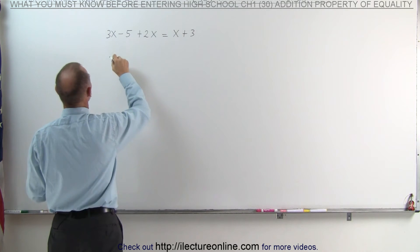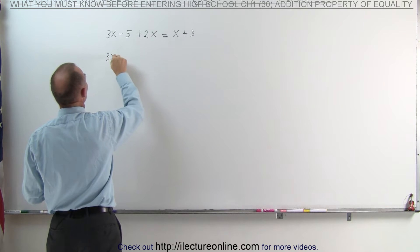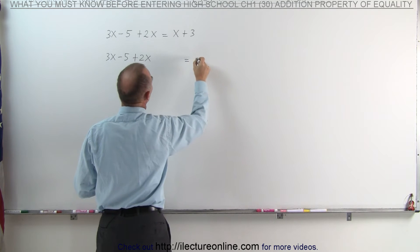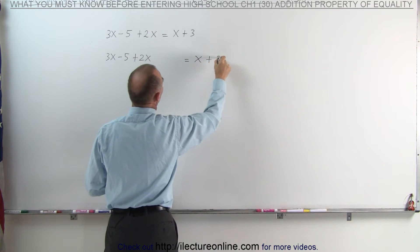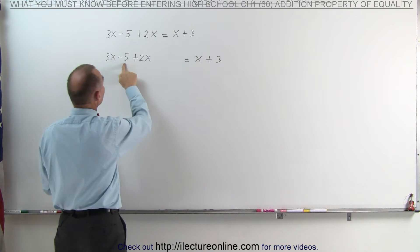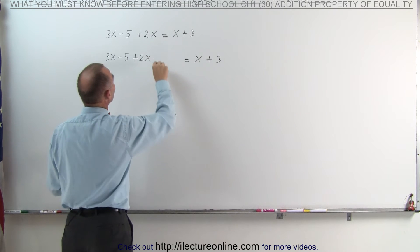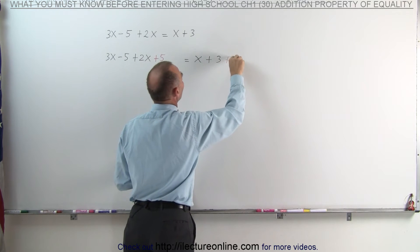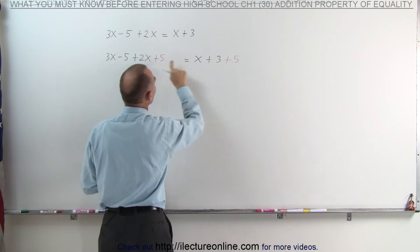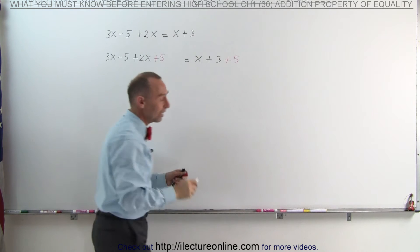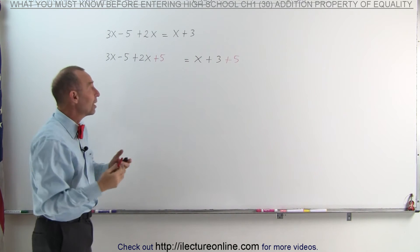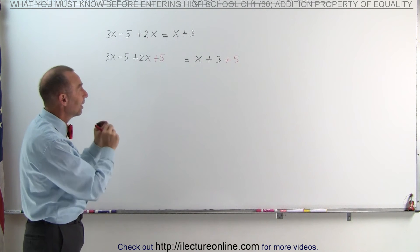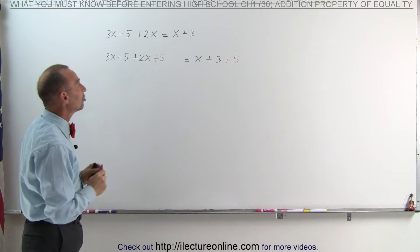That means if we have 3X minus 5 plus 2X equals X plus 3, what we're going to do is to get rid of the negative 5 — I'm going to add 5 to the left side. When I do that, I must also add 5 to the right side. If I add the same number to both sides of the equation, then I didn't change the equation; I kept the equation the same. Whenever I add the same number to both sides, I have not fundamentally changed anything.